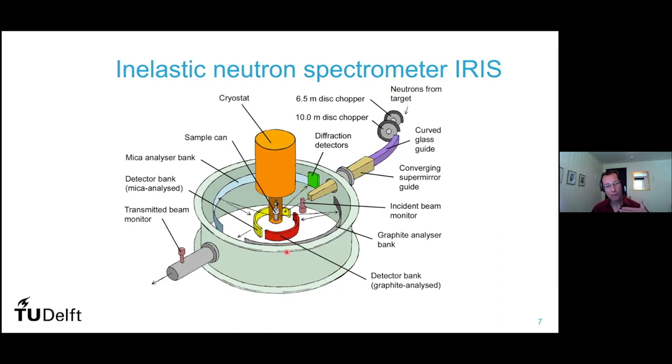The neutrons get reflected on the sample. Then they go to monochromators, to detectors, and then you know, again, exactly the wavelength and the energy of the neutrons. And if there's a difference between the initial energy and the final energy, then you know that it's due to the collision with the molecules, with the proteins. If the proteins are moving, then they give energy to the neutron, or they can absorb energy.